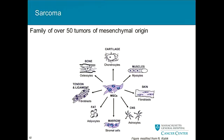Recognizing that many of you aren't clinicians, and even for those of you who are, you probably don't see sarcomas too often. I thought I'd spend a couple slides giving you a little background on how we think of these diseases. Sarcomas are actually a family of over 50 different tumors of mesenchymal origin — connective tissue. So if you think of bone, cartilage, fat, muscle — when these turn into cancers, they're called sarcomas.